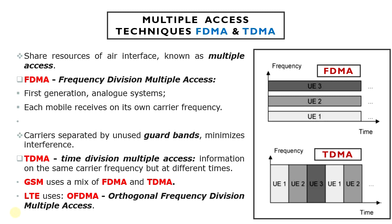Frequency Division Multiple Access, or FDMA, was used by the first generation analog system. In this technique, each mobile receives on its own carrier frequency, which is distinguished from the others by the use of an analog filter. The carriers are separated by guard bands, which minimizes the interference between them.